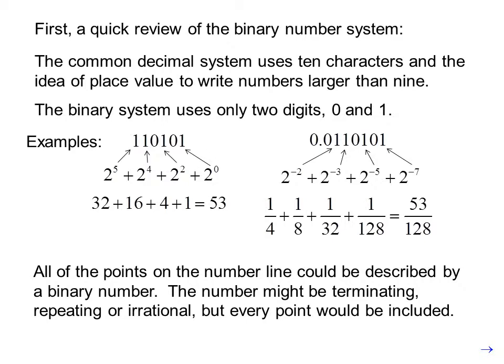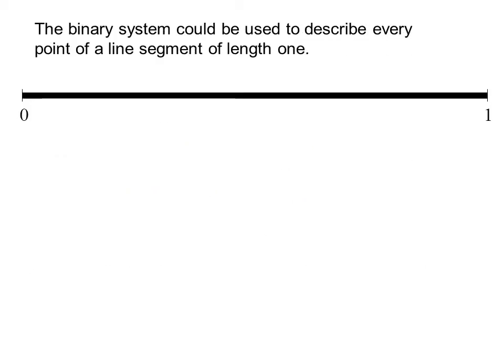The number might be terminating, repeating, or irrational, but every point would be included. The binary system could be used to describe every point of a line segment of length 1. For instance, the point 1 half could be written in the binary system as 0.1. The point 1 fourth is 0.01 in binary. And 2 thirds in binary is 0.101010 repeating.